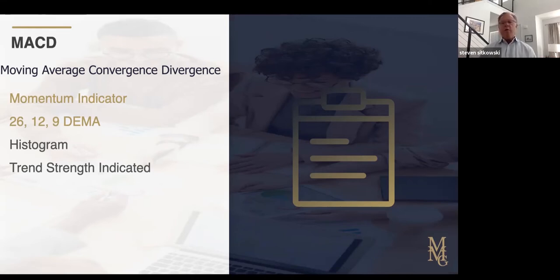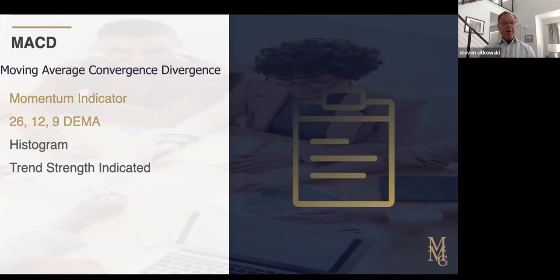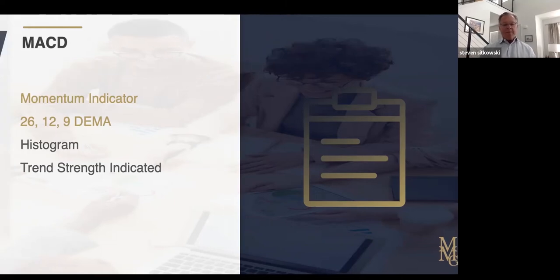The thing we're going to be paying particular attention to in this class is the histogram. I'm going to show you a live chart in just a minute and how we use the histogram. It gives us a visual depiction of whether or not we have a bullish or a bearish trend — and is that trend accelerating, getting stronger, or beginning to weaken? So it's a trend strength indicator.